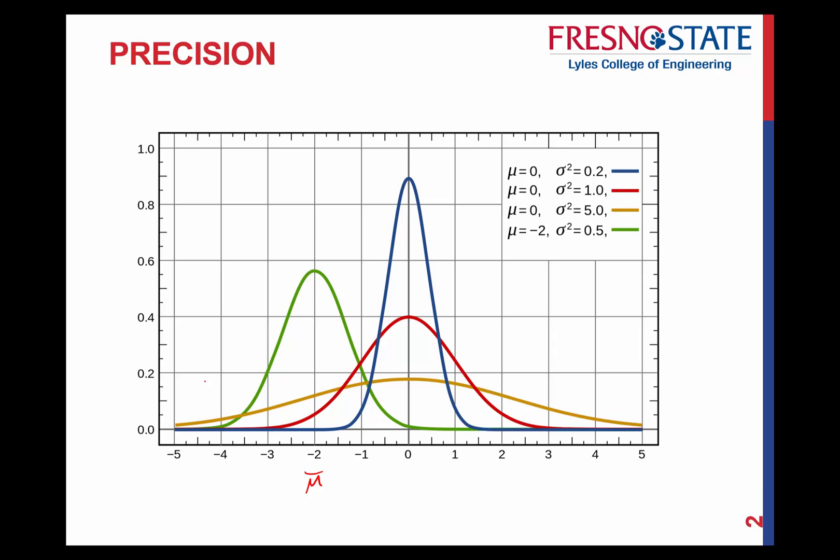Now which one is the most precise? Precision isn't the same thing as accuracy. To be precise, you don't have to be around the accurate value — it's a matter of repeatability, how much you can repeat that error. The blue curve is the most precise, even if not the most accurate. The yellow curve is neither precise nor accurate.